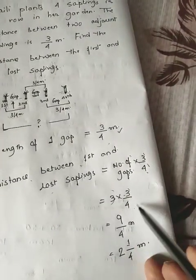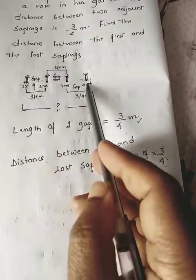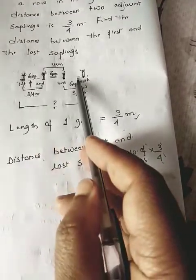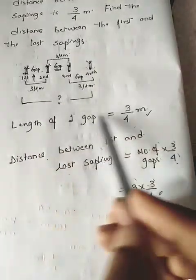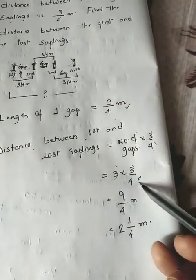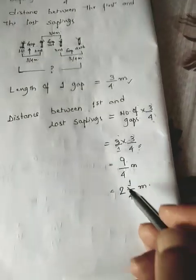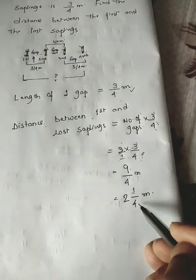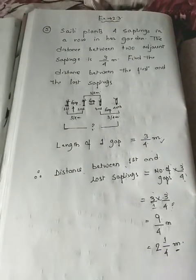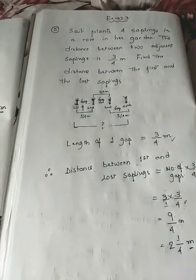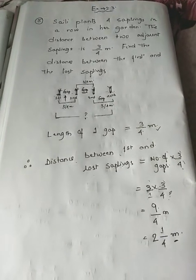The concept is: to find the distance between the first and last sapling, count the number of gaps and multiply by the length of each gap, which is 3/4 meter. So 3 into 3/4 — you cannot reduce this — 3 threes are 9 and 4 ones are 4, giving 9/4. In mixed fraction form, that is 2 and 1/4 meters. Please complete all sums of questions 4 and 5. Thank you and take care.